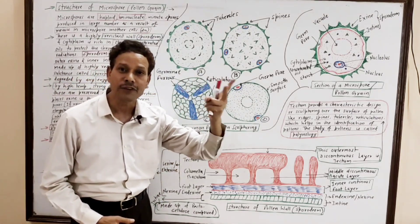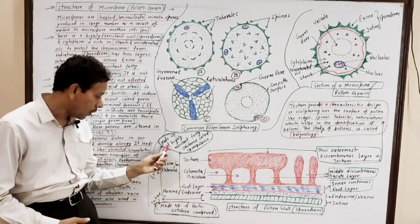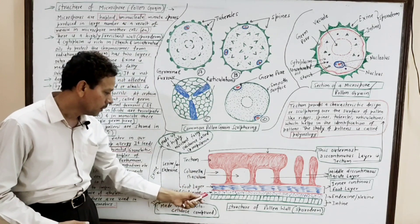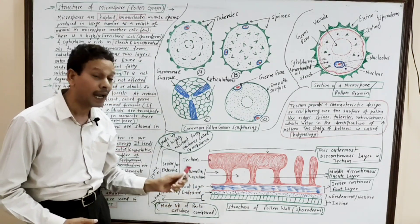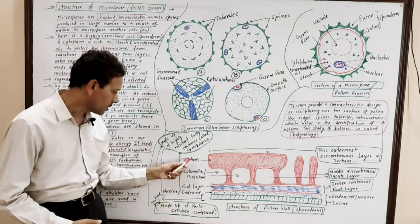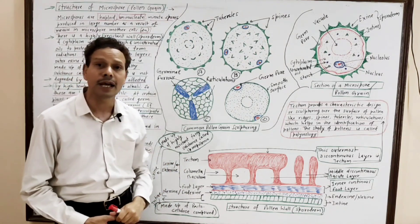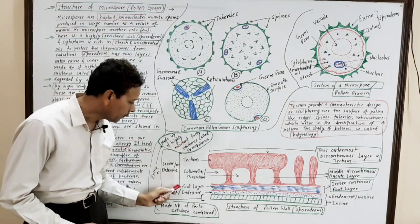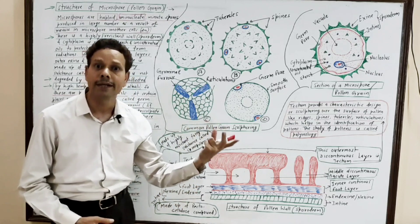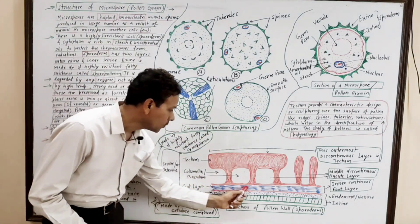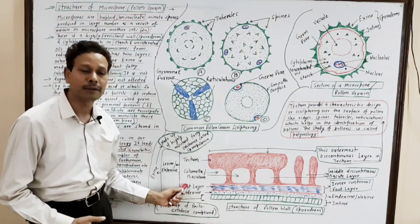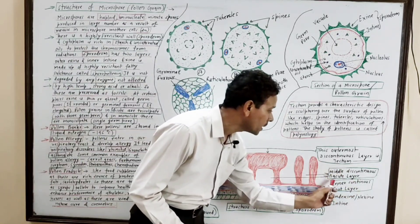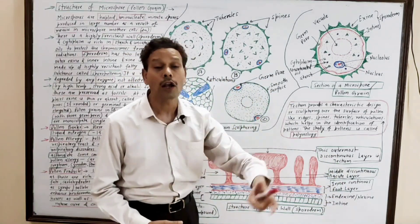The outer exine layer is further differentiated into two layers: the inner layer is the nexine, and the outer layer is the sexine. This outer sexine is further differentiated into three layers: the innermost continuous layer is the foot layer; the middle discontinuous layer is the baculate or columnar layer.